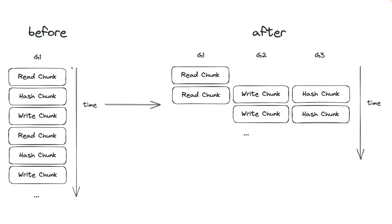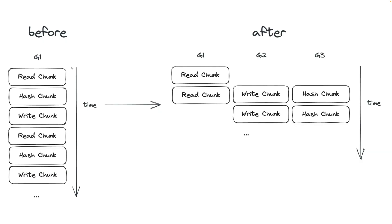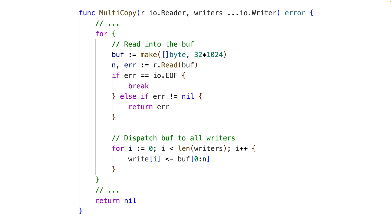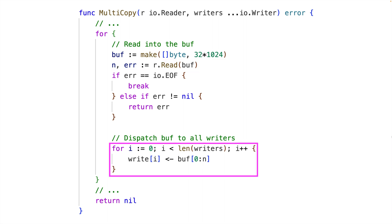How can we optimize further? The problem is that we only have a single goroutine doing all the work — reading a chunk, hashing it, writing it to the temporary file, and repeating. What we can do instead is use three goroutines: one goroutine reads a chunk and passes it to two other goroutines to write the chunk to the file and hash it concurrently, while the first goroutine can already proceed to read another chunk from the network. To implement this, we create our own multi-copy method, which takes an io.Reader and multiple io.Writers. The main loop allocates a new 32-kilobyte buffer, reads data into it, and dispatches this buffer to all writers.